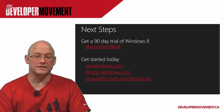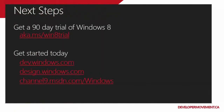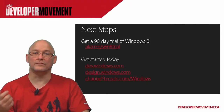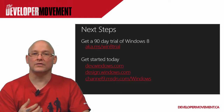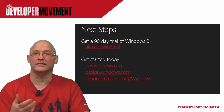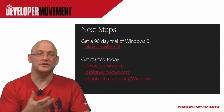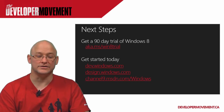Next steps: go out and get a 90-day trial of Windows 8, which you can test either in a VM or installed on your computer. Check out dev.windows.com, design.windows.com, and channel9.msdn.com/windows. Also check out dev.windowsphone.com for Windows Phone tools, and windowsazure.com — you can quickly spin up an application running across two different platforms and the cloud to see how it all works together. You can reach me at atleehunter on Twitter — I'm always looking for feedback. Thanks.